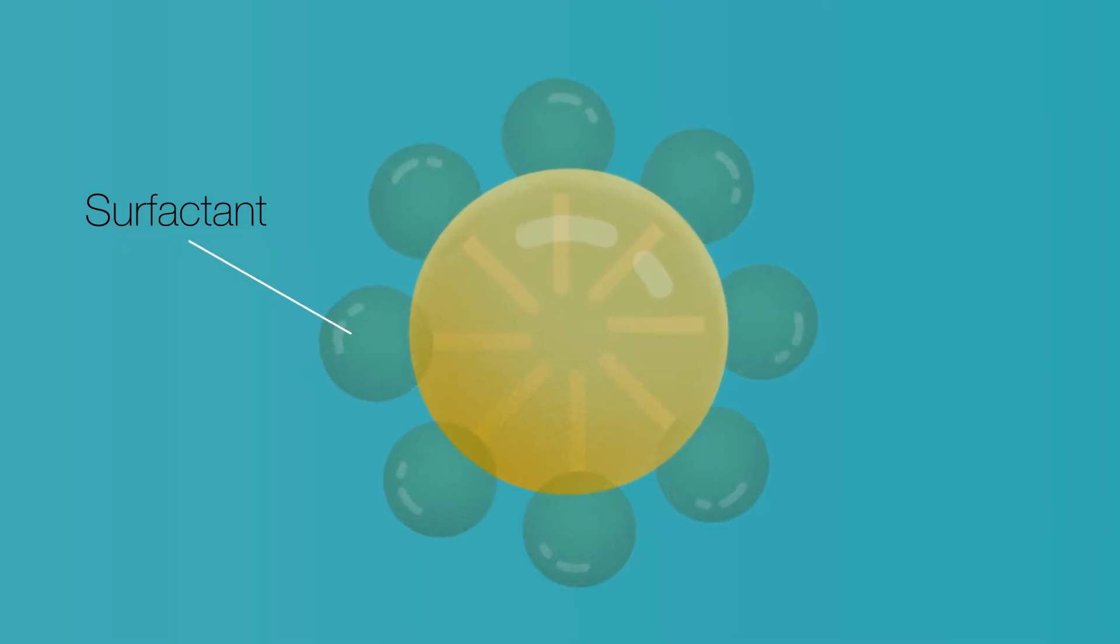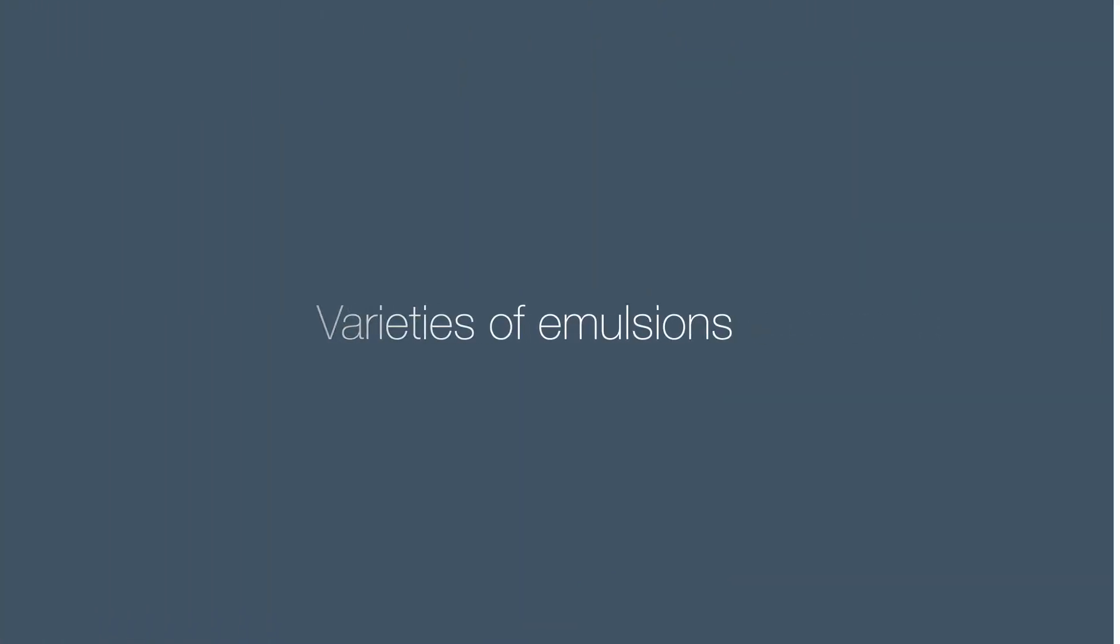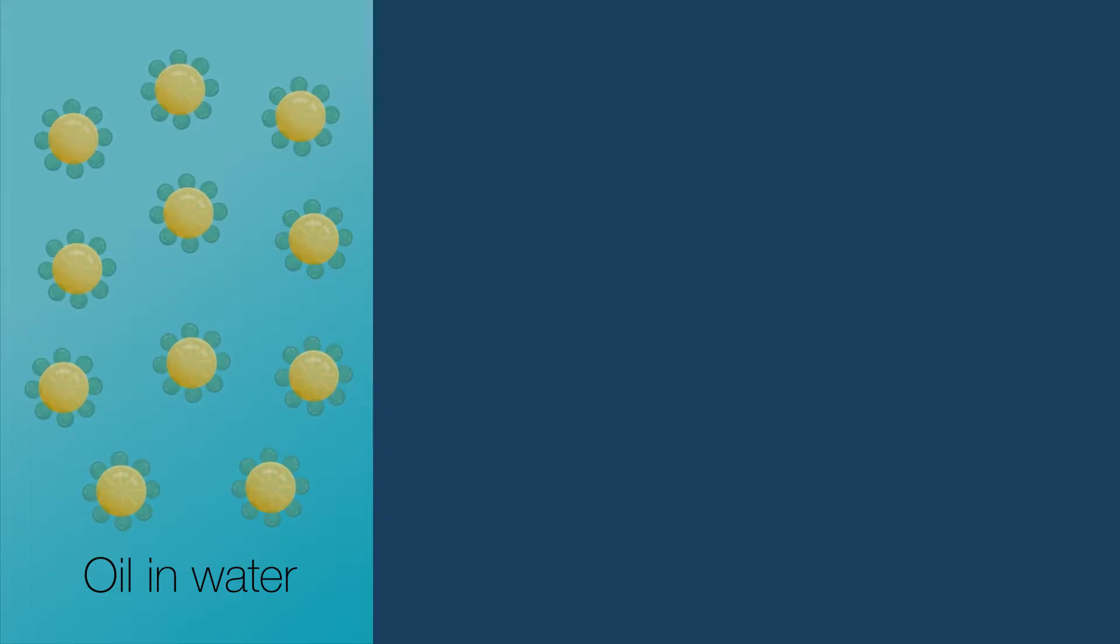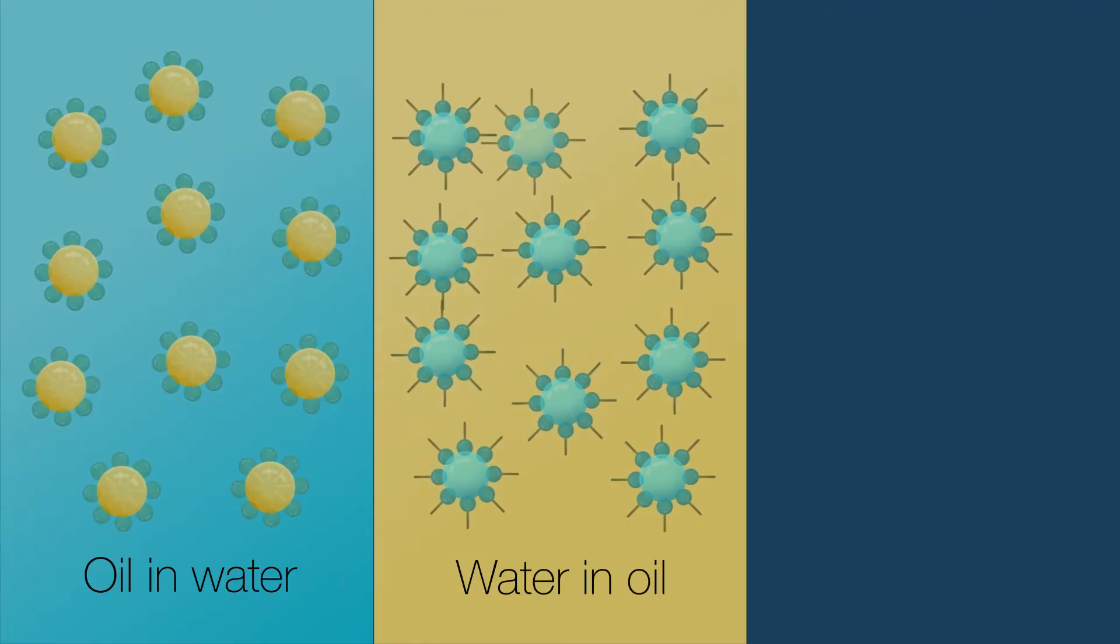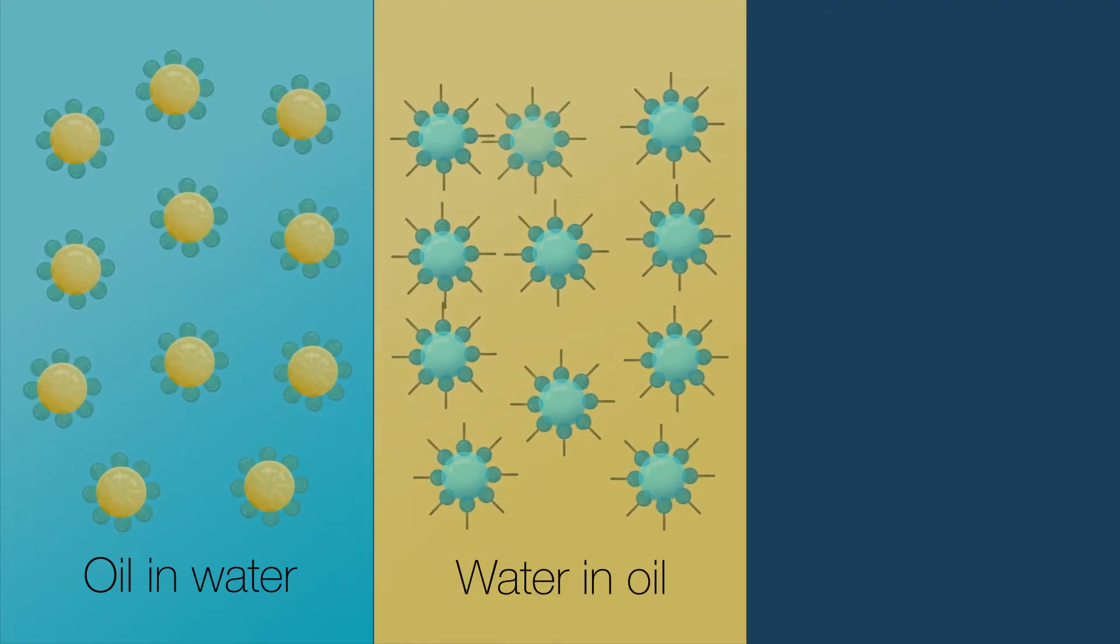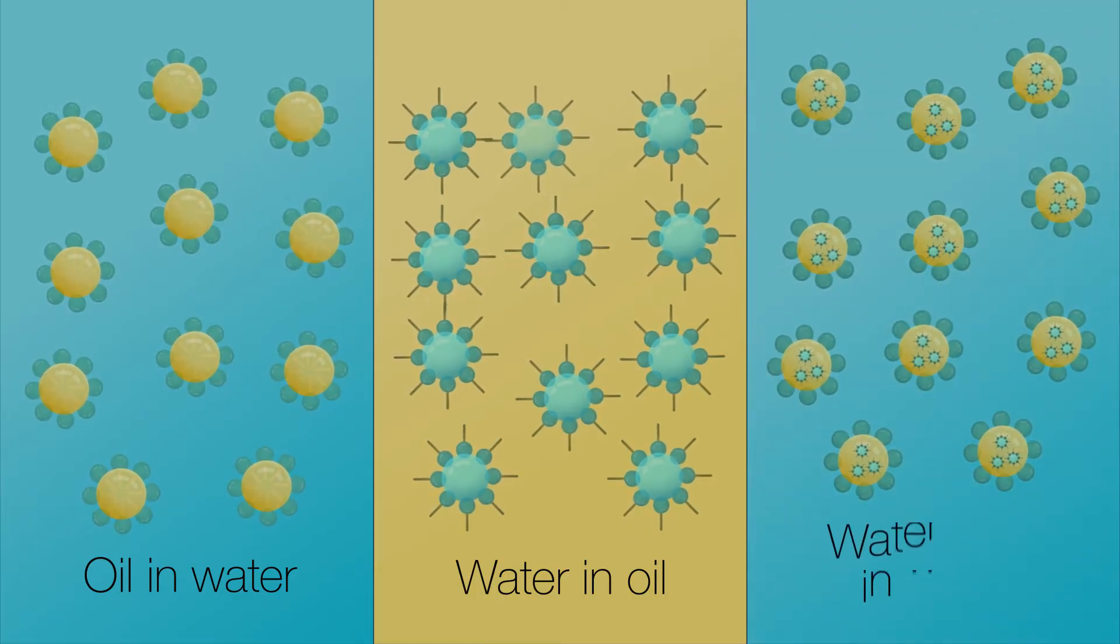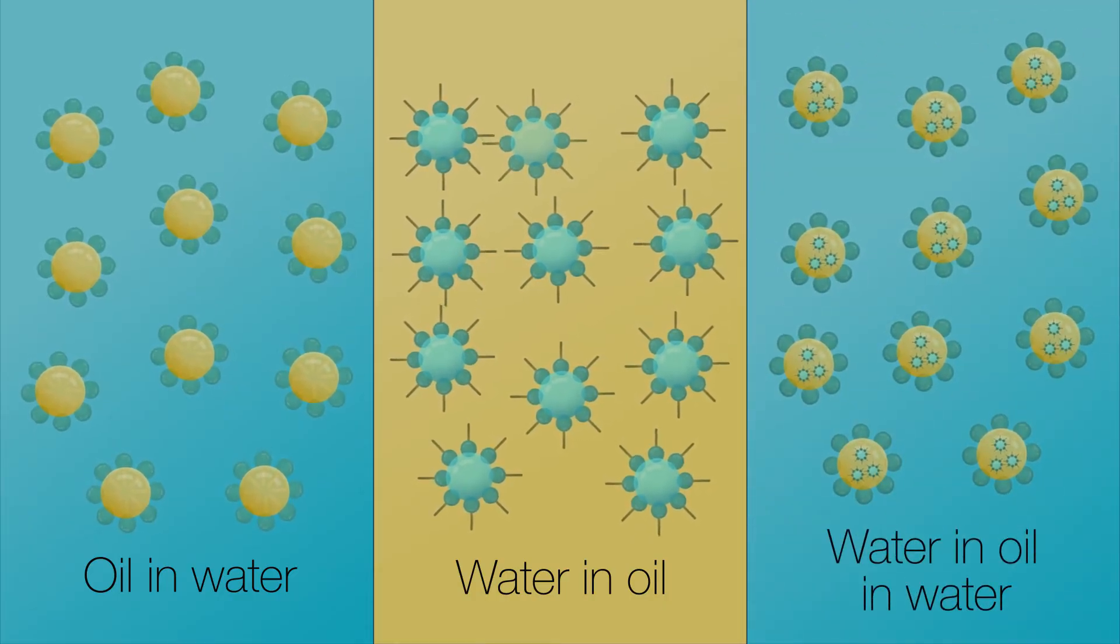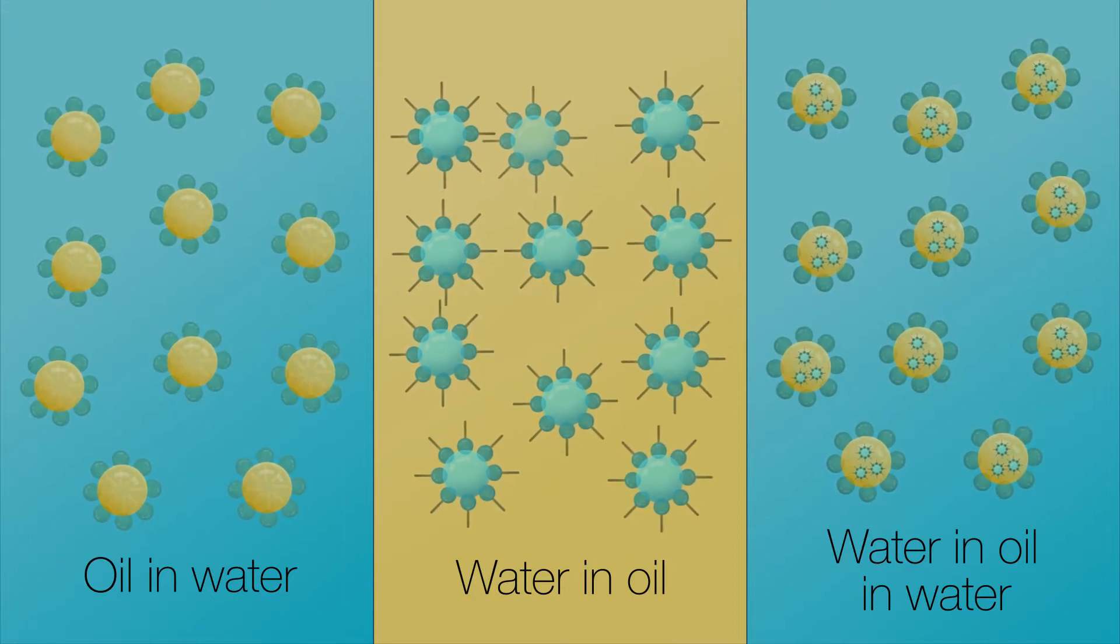Both the continuous and dispersed phase can have other additives for specific needs. There are several varieties of emulsions. Oil and water, where the oil is the dispersed phase and water is the continuous phase. Water and oil emulsions, where the water is the dispersed phase and oil is the continuous phase. And multiple emulsions, such as a water and oil and water emulsion. This video will only focus on oil and water emulsions.